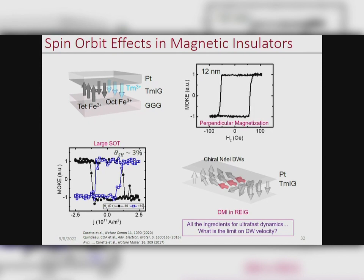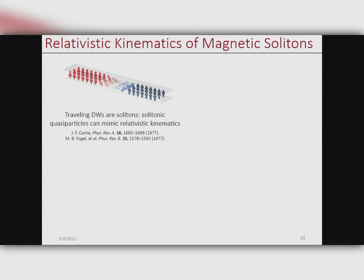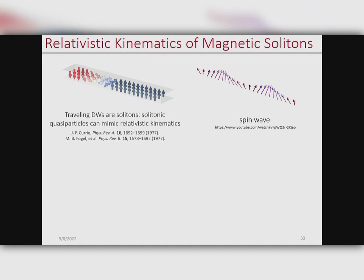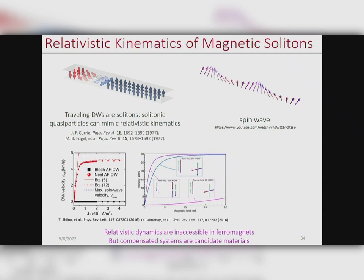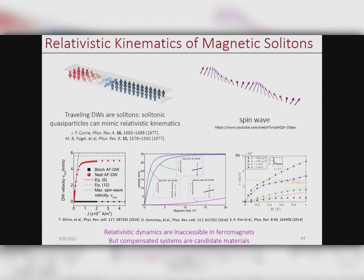We asked what really limits the domain wall speed in a material — this is actually a solved problem from about 40 years ago. Moving domain walls are solitons, so they can mimic relativistic kinematics. Another way of saying this is that because they're solitary wave packets comprised of a superposition of spin waves, the fastest you can move a domain wall is actually the spin wave group velocity of the material. This was confirmed more recently with numerical and atomistic simulations, which also give examples of compensated systems that could achieve this upper bound.